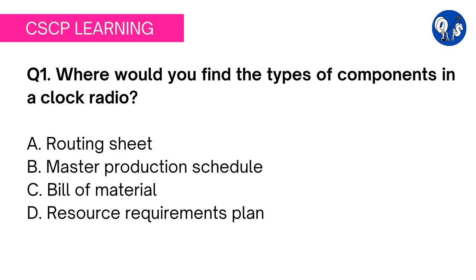A bill of material, or BOM, is a centralized source of information used to manufacture a product. It is a list of the items needed to create a product as well as the instructions on how to assemble that product. This is quite evidently the correct answer. Let's just have a look at option D as well: resource requirements planning.